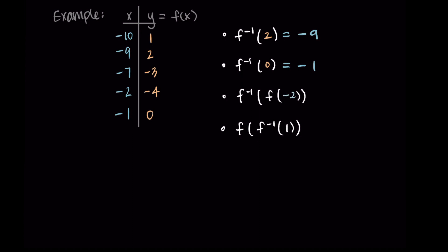Now for the composition f inverse of f(−2), I start on the inside with f(−2). The input of negative 2 corresponds to negative 4 as an output, so f(−2) = −4. Now I evaluate f inverse of −4, which asks which input gives an output of negative 4. Negative 4 as an output corresponds to negative 2 as an input, so negative 2 is my solution.